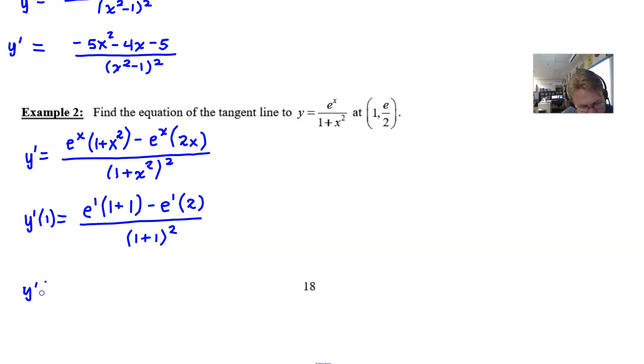y'(1), then, is going to be, well, what we have here, 2 times e, so that's pretty much simplified, minus, hey, that's another 2 times e. Well, I don't know if it really matters much what we have in the denominator. Just for kicks, it's 4, right? 1 plus 1 squared is going to be 2 squared, or 4. And so the answer to this is going to be 0 over 4, or just 0.